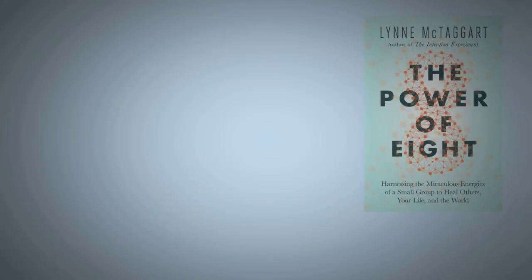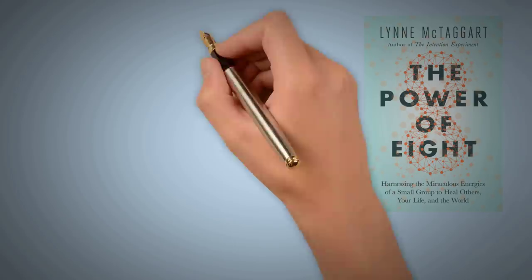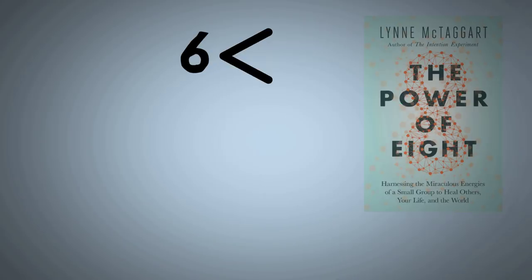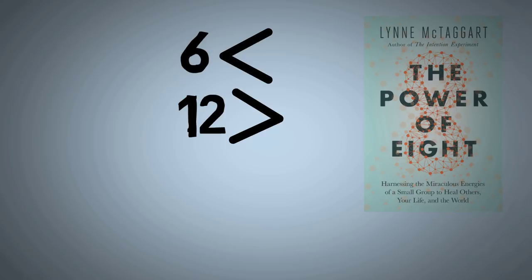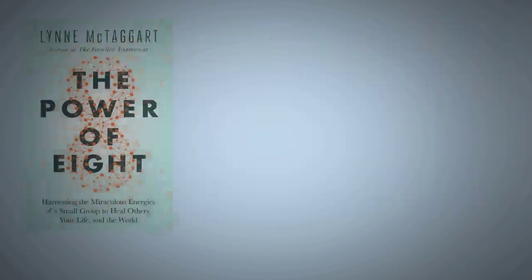In the second part of the book, the author gives some instructions on how to create your own Power of Eight. First of all, Lynne suggests that your group be no fewer than six and no more than 12 so that you have enough of a critical mass to feel like a group.